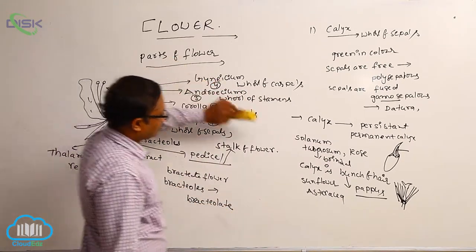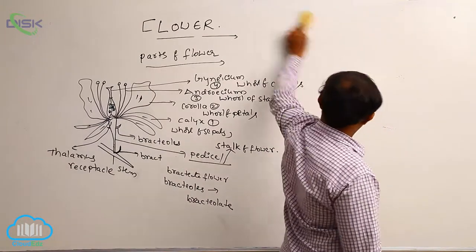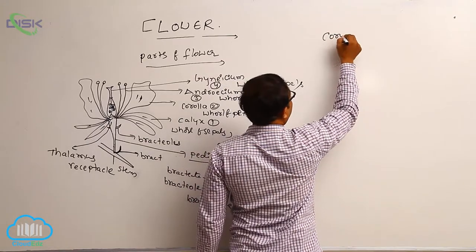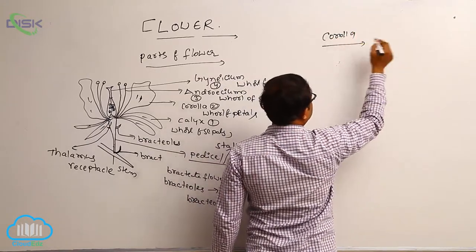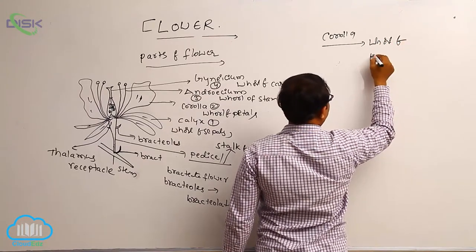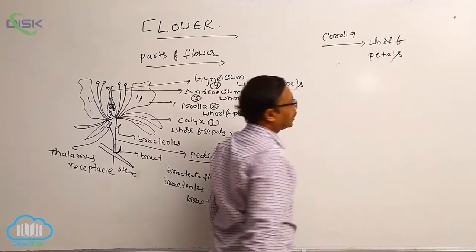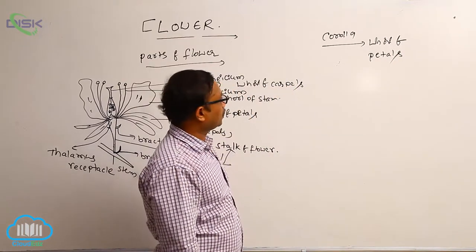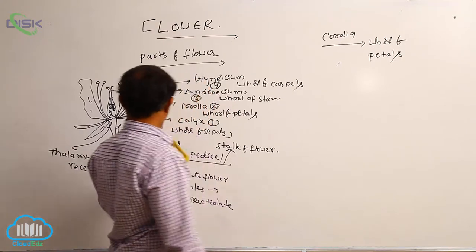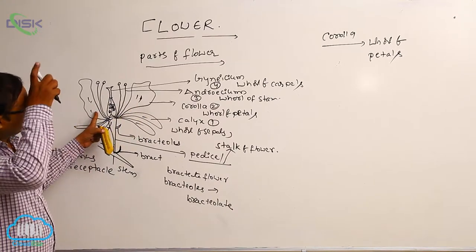That completes calyx. Second one is corolla. Corolla means it is a whorl of petals. Whorl of petals is known as corolla. Generally, corolla appears in different bright colours. This corolla appears in different colours.